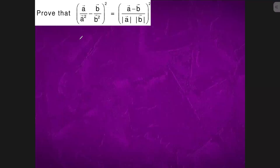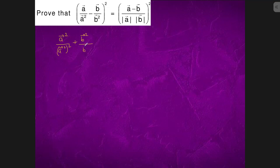In this question we have a minus b, so what we can write is a² + b² - 2ab. So what we can do finally is write this expression out.